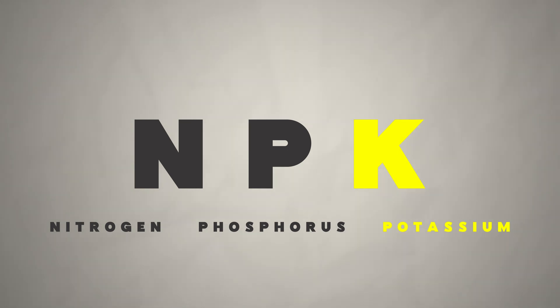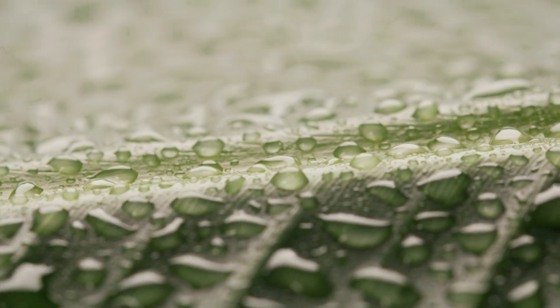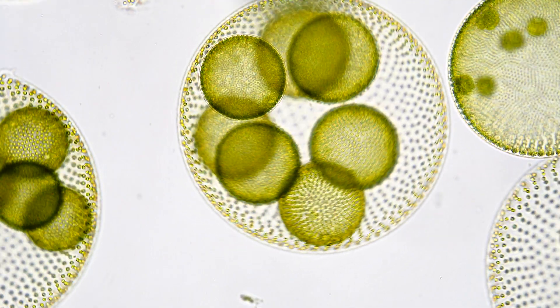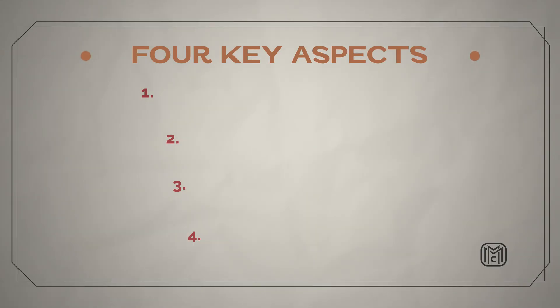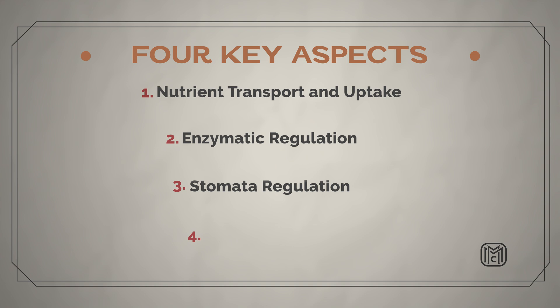With potassium, we want to understand it as a key macronutrient for plant growth and development. The filter to understand potassium through is as a transport or gatekeeper element — it's essential for the movement of nutrients and solution in and out of cells. The four key areas we'll cover are: nutrient uptake, enzymatic activity that potassium regulates, stomatal regulation, and overall stress tolerance that potassium supports in plant growth.